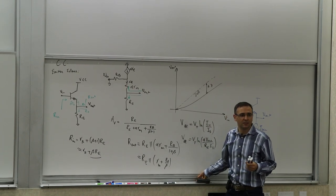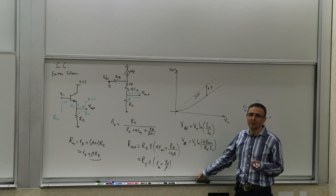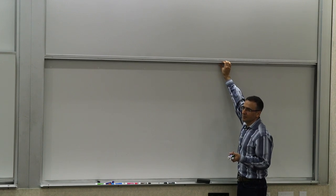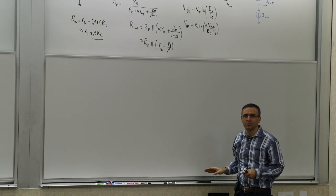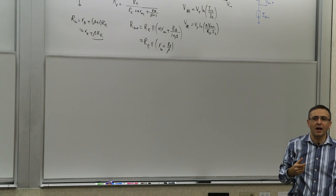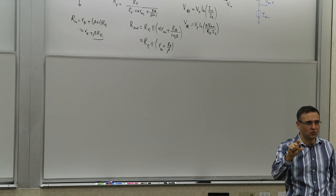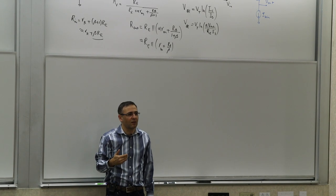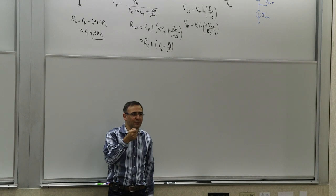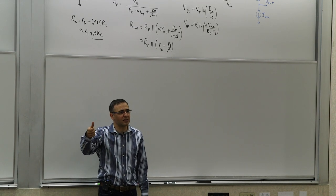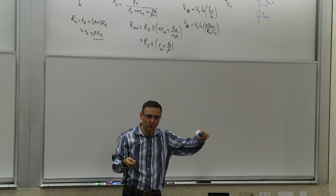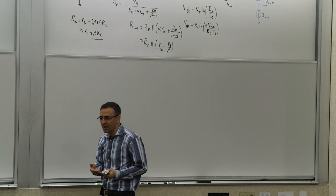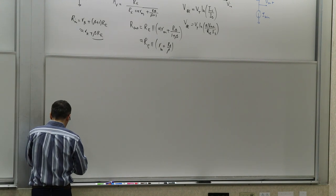Any questions on the common collector? The T model makes the analysis trivial — it's just a resistive voltage divider. Now, where else can we apply input and measure output? We can also change the emitter instead of the base to produce a VBE change. So instead of applying input to the base and taking output from the collector, we apply the input to the emitter and take output from the collector. That's what we call common base.